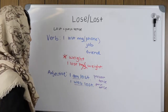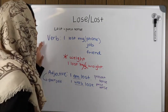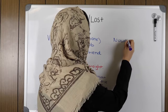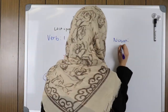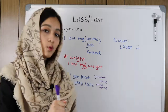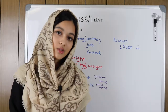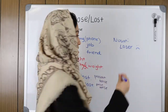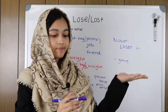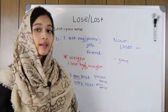We've covered 'lost' as a verb and as an adjective. It can also be used as a noun — 'loser.' That's not a good connotation; if someone calls you a loser it means you're not doing anything with your life. But it can also describe a person in a game — there's a winner and a loser. I'm hoping all of you will be winners after watching this lesson.